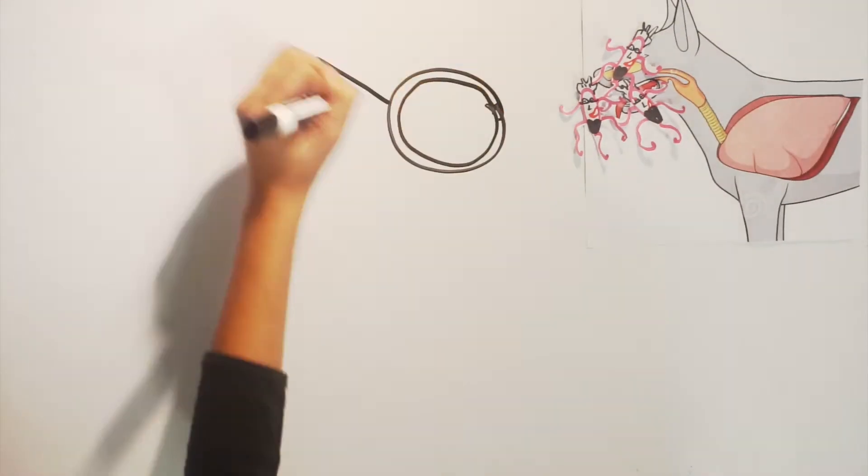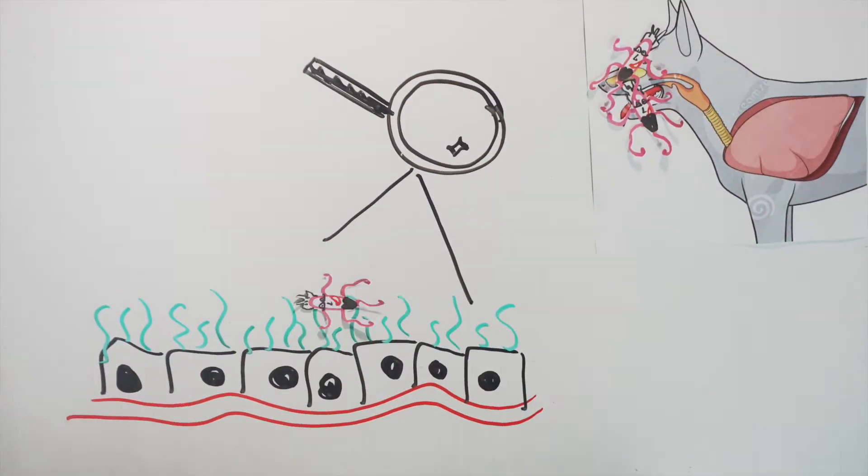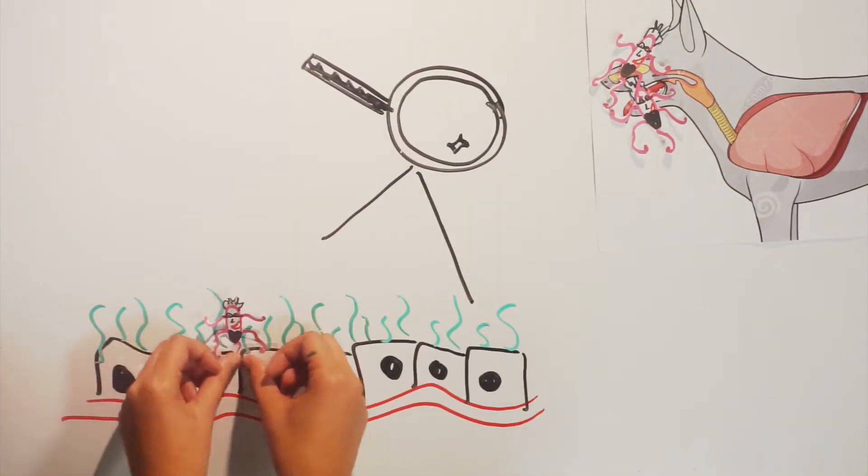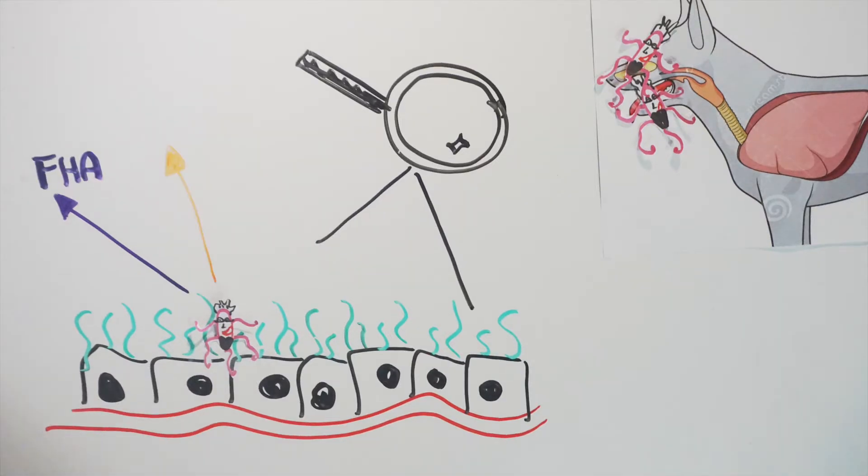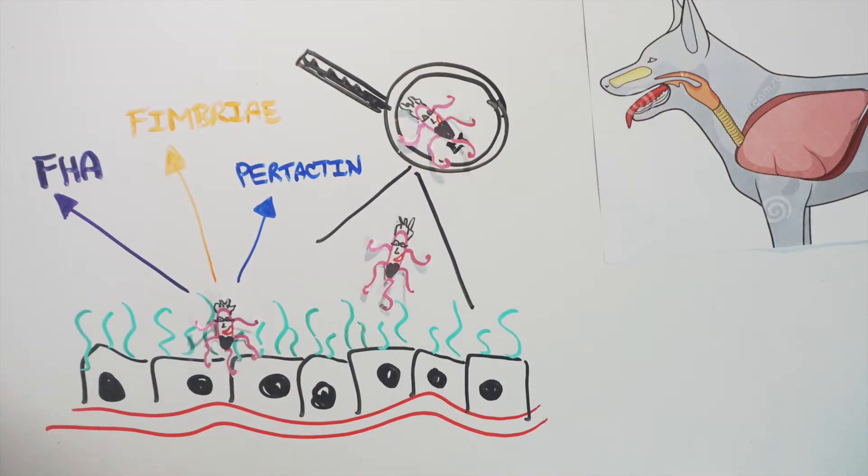Once inhaled, she adheres to the cilia of the respiratory epithelium using her special adhesions, like her filamentous hemagglutinin, fimbriae, and pertactin, allowing colonization of the respiratory tract.